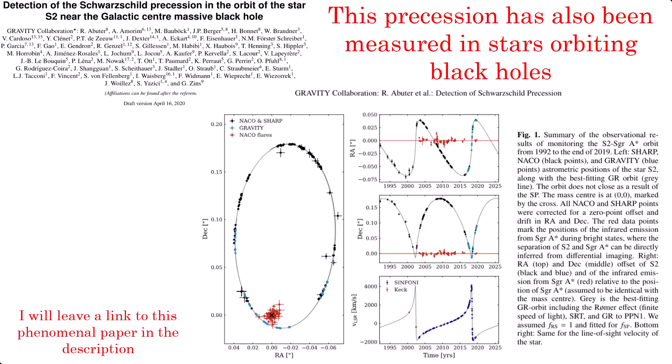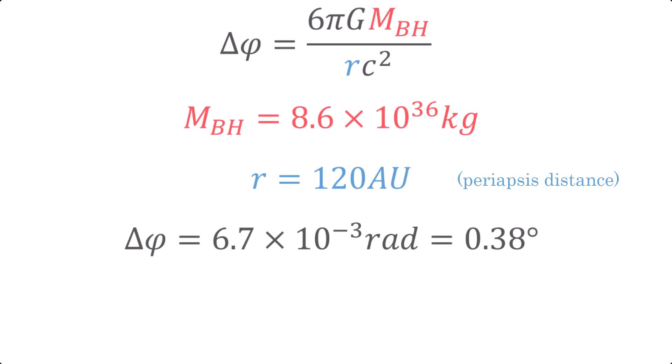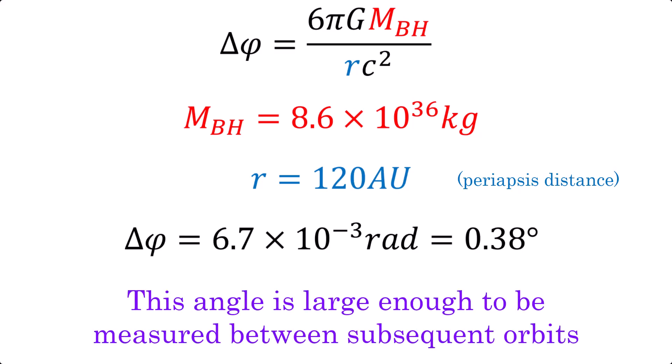I mentioned how this precession increases for objects orbiting closer to larger objects. The star in question only orbits 120 astronomical units away from the supermassive black hole at its point of closest approach. The central black hole has a mass of around 4.3 million times that of the Sun, allowing us to measure the precession between subsequent complete orbits.